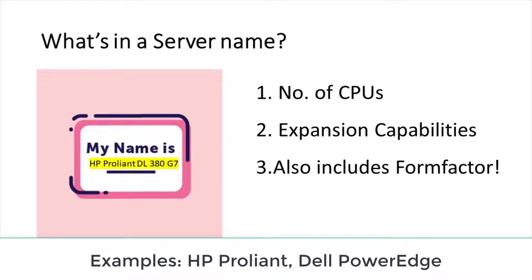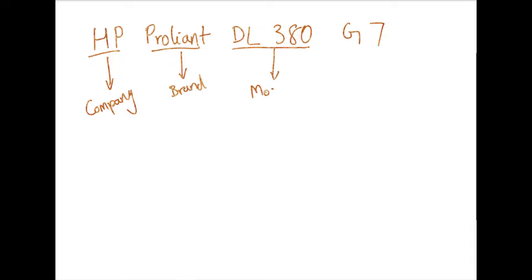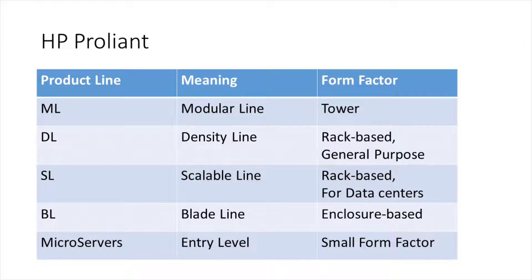I'm going to be taking two brands I have frequently come across: HP Proliant and Dell PowerEdge. Let's start with HP Proliant. An example of a server name would be HP Proliant DL380 G7. HP is the company, Proliant is the brand, DL380 is the model, and G7 is the generation. DL stands for density line, which is another name for a general-purpose rack-mountable server. Proliant also has other product lines like ML, SL, BL, and microservers — all of these basically indicate the form factor of the server.